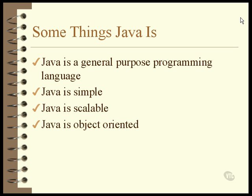Java is an object-oriented programming language. It is so object-oriented that you can't help but write a Java program in terms of objects. If you have no prior programming experience, then you'll have no problem with this concept because you won't have any preconceived notions of what objects are. If you have some experience with another language, you'll find that things operate about the same in Java as they do in other object-oriented languages, but you must be very careful about some of the terminology.